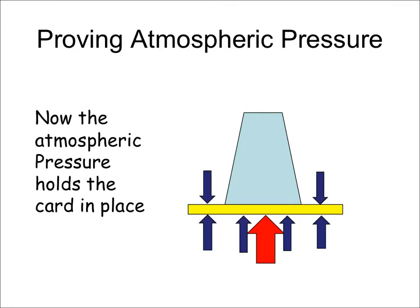Atmospheric pressure is demonstrated with the famous experiment of the cup and the card — famous because it usually goes wrong and water spills everywhere. Basically, the card adheres to the absolutely full glass of water as it's turned over because there is nowhere for the air to get in. Atmospheric pressure, illustrated by arrows, holds the card into position in a suction effect. It's atmospheric pressure which maintains this height of fluid.